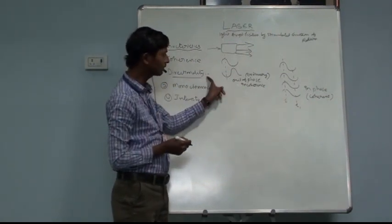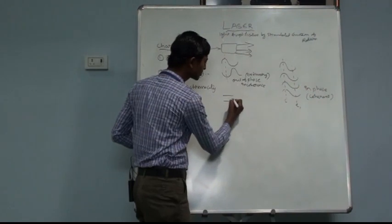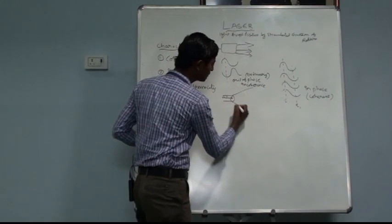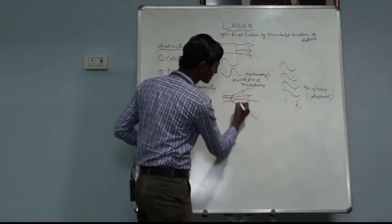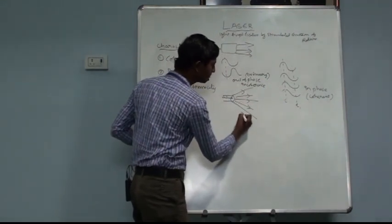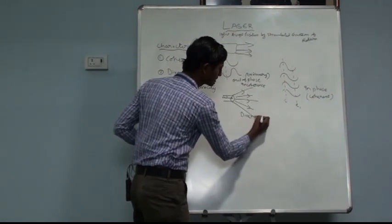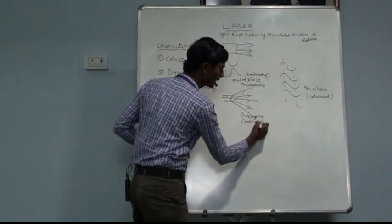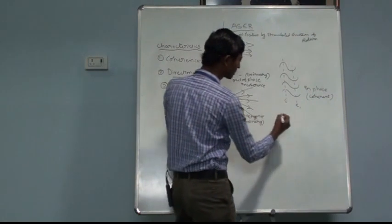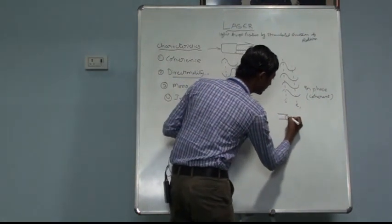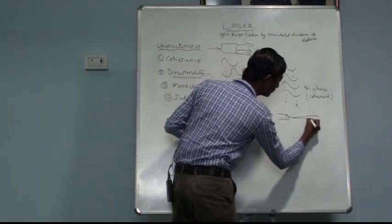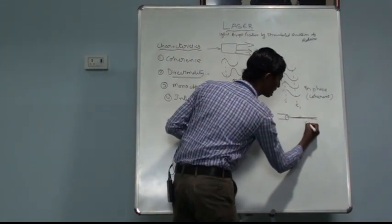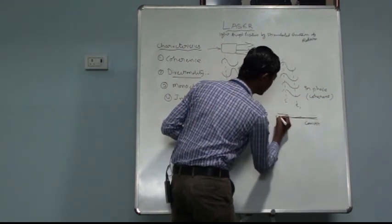The second important property is directionality. In an ordinary source of light, the light waves are emitted in all random directions — this is known as the divergence nature. In the case of laser light, the light is emitted in only one particular direction — this property is known as convergence.